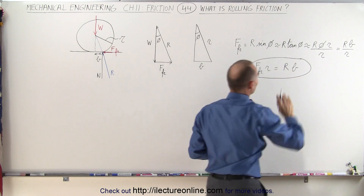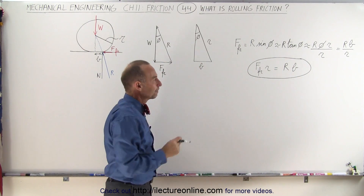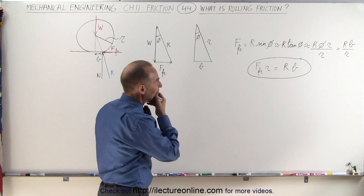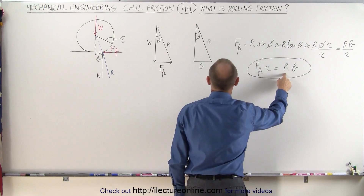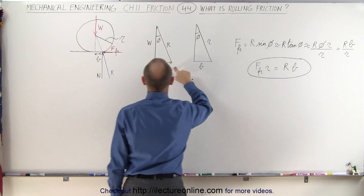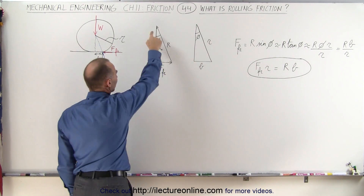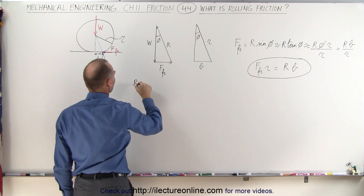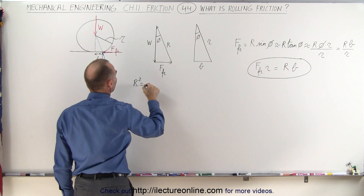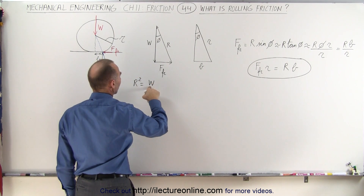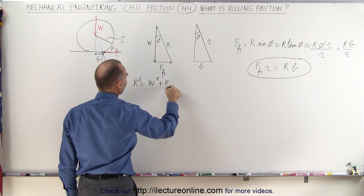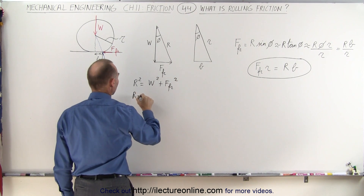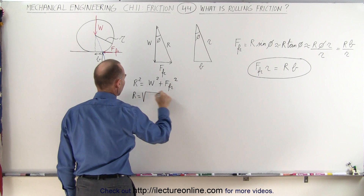Now at this point we're not quite done yet, because we may not know what the reaction force is. But going back, we can see using the Pythagorean theorem that R squared is equal to the load squared plus the friction force squared, or R is equal to the square root of that.